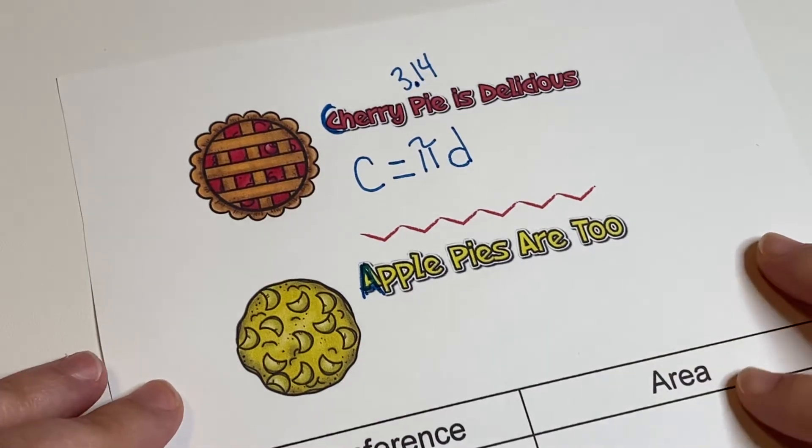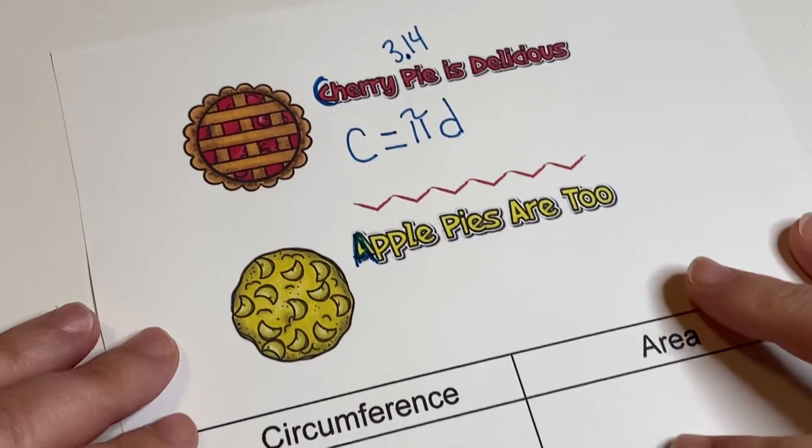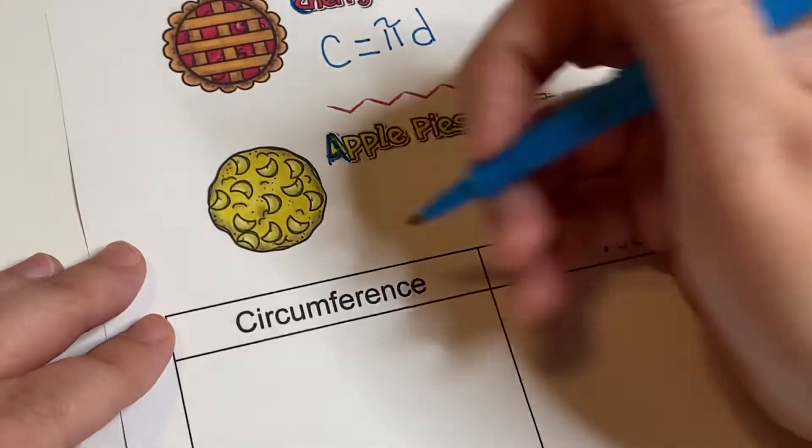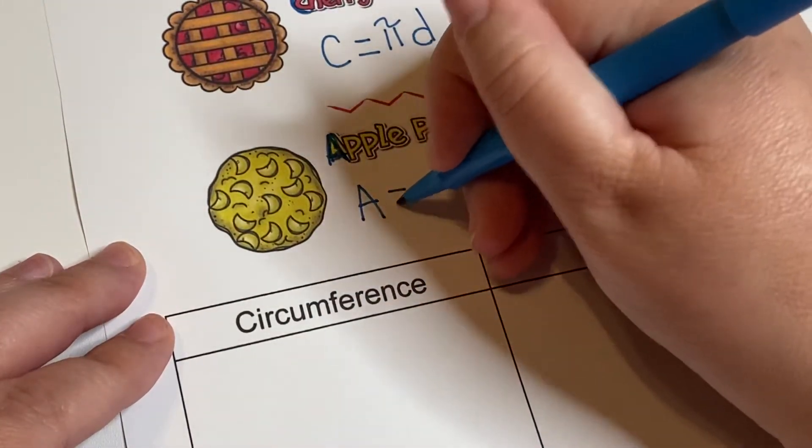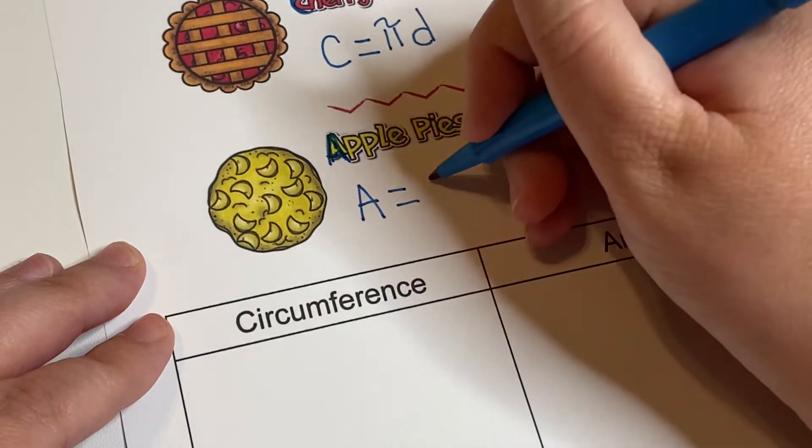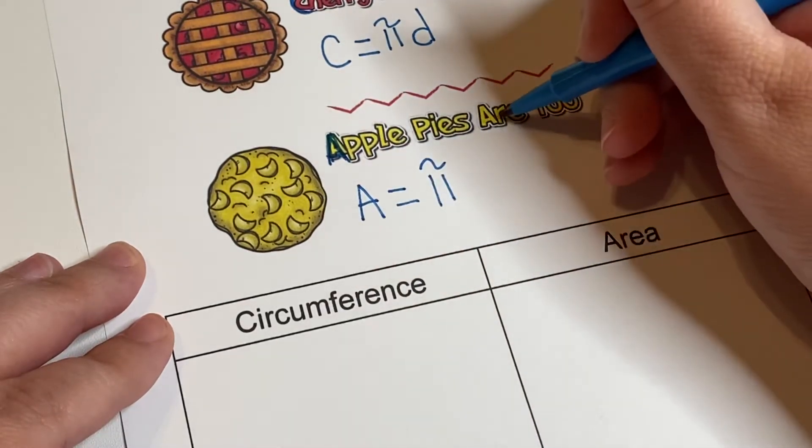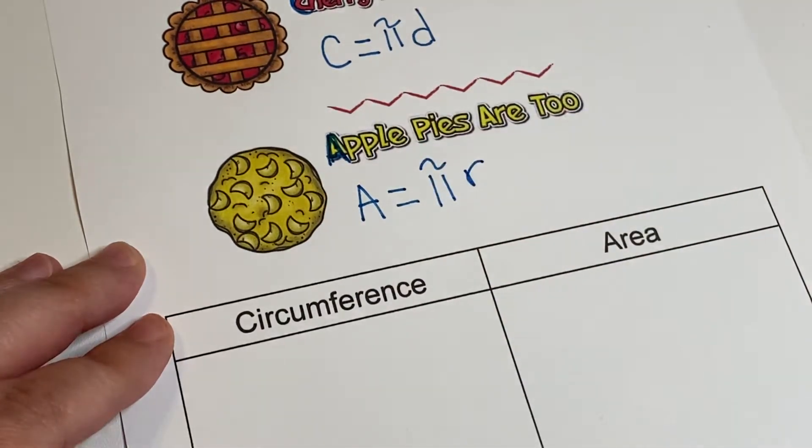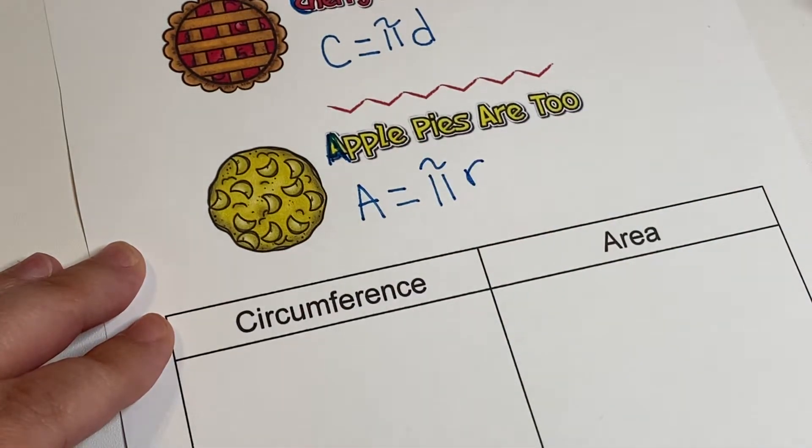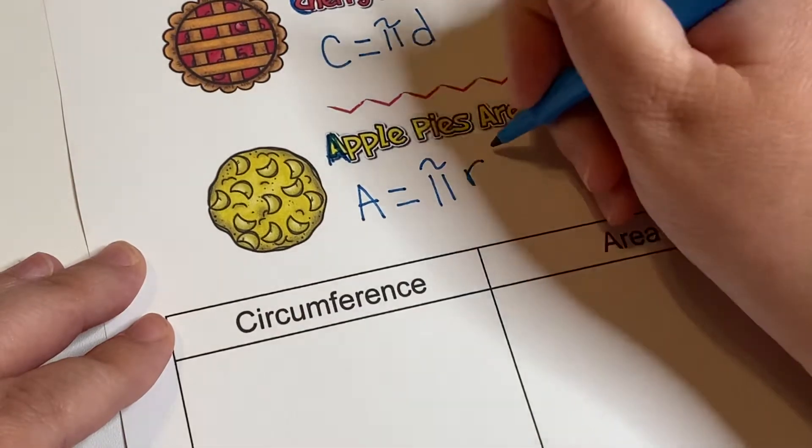And then apple pies are too, so that's going to be our area formula. So area equals pies - we're still just going to put one π. Pies R, and this R is going to be this kind of R, we're going to switch it around. And when it says two, that means we're going to square it.